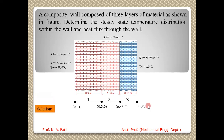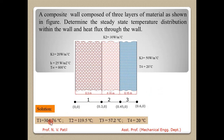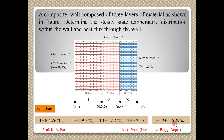The analytical solution for this composite wall gives temperatures at four different locations: 304.76 degree Celsius at one end, then 119.5 degree Celsius, then 57.2 and 20 degree Celsius at the other end. The heat flux is 12400.6 Watt per meter square. So let's analyze this using ANSYS Workbench.